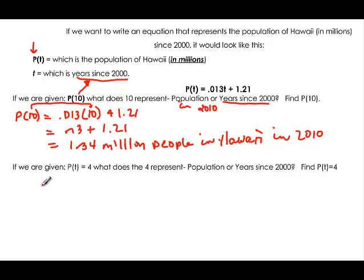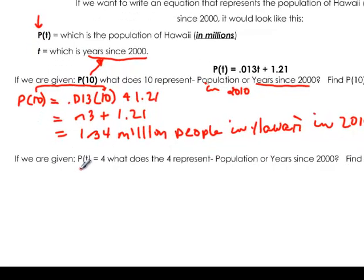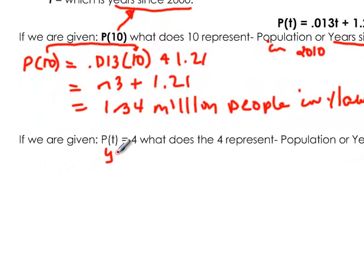Now, what if we have P(t) = 4? Remember, this is like y = 4. So when it says P(t) = 0.013t + 1.21...